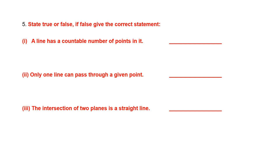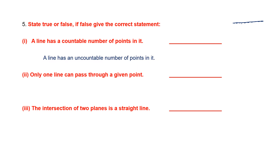Question five. State true or false. If false, give the correct statement. A line has a countable number of points in it — there are many points on a line, so this statement is false. A line has an uncountable number of points in it. The correct statement: a line has an uncountable number of points in it.